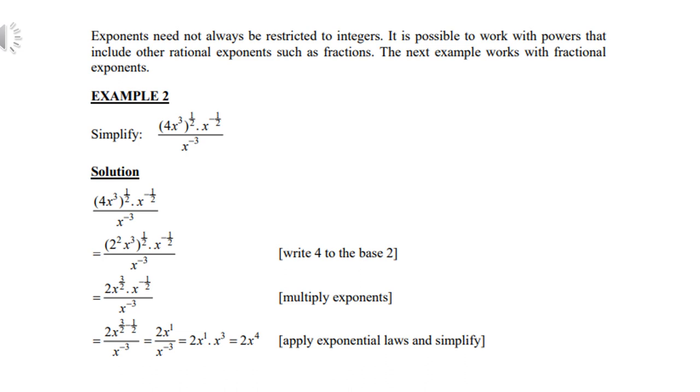Then you multiply the two in the numerator. So 2x to the power 3/2 times x to the power minus 1/2 is the same as 2 times x to the power 1 over x to the power minus 3, which you must take up and becomes x to the power plus 3.